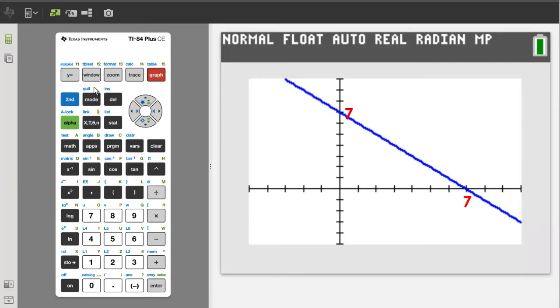To confirm that the line crosses the y axis at a positive 7 and crosses the x axis at a positive 7, you can press the trace button.